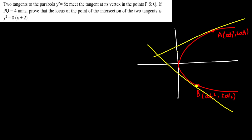The tangents meet the tangent at the vertex at points P and Q. Now in the question, they say this length PQ is fixed — it is 4 units. So A and B are changing in such a way that this length remains fixed at 4 units. We have to find the locus, and let's call the locus point h, k, as we always take the locus as h, k.